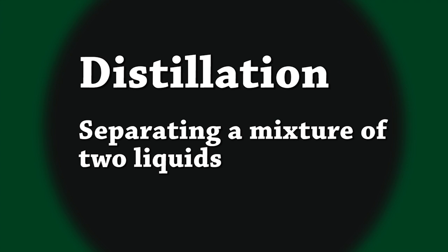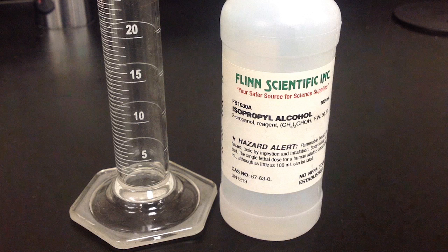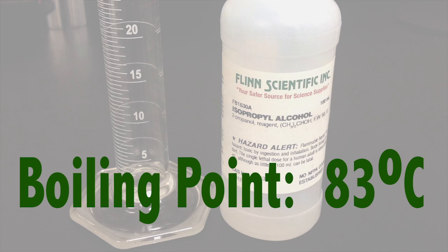Distillation is a method for separating a mixture of two liquids with different boiling points. Isopropyl alcohol has a boiling point of 83 degrees Celsius.